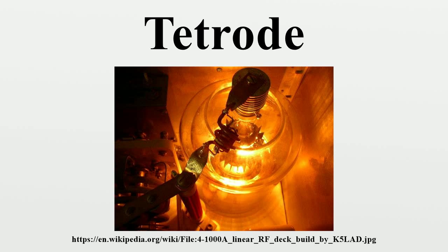The mechanism by which the space charge grid lowers control grid current in an electrometer tetrode is that it prevents positive ions originating in the cathode from reaching the control grid. Note that when a space charge grid is added to a triode, the first grid in the resulting tetrode is the space charge grid, and the second grid is the control grid.